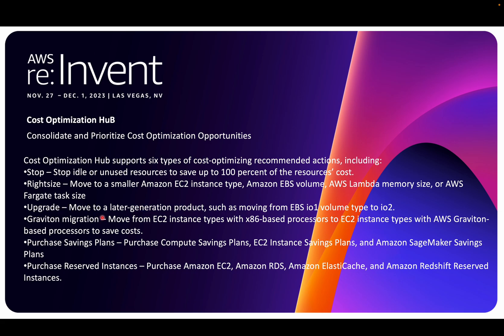Third is 'Upgrade': move to a later generation product, such as EBS volume from io1 to io2 for better performance and lower cost. A great example is GP2 to GP3 migration — with GP3 you get 20% cheaper cost compared to GP2, and better performance as well. That upgrade approach helps you get better performance at lower cost. Fourth is 'Graviton migration', which is running hot across the industry for the last two years.